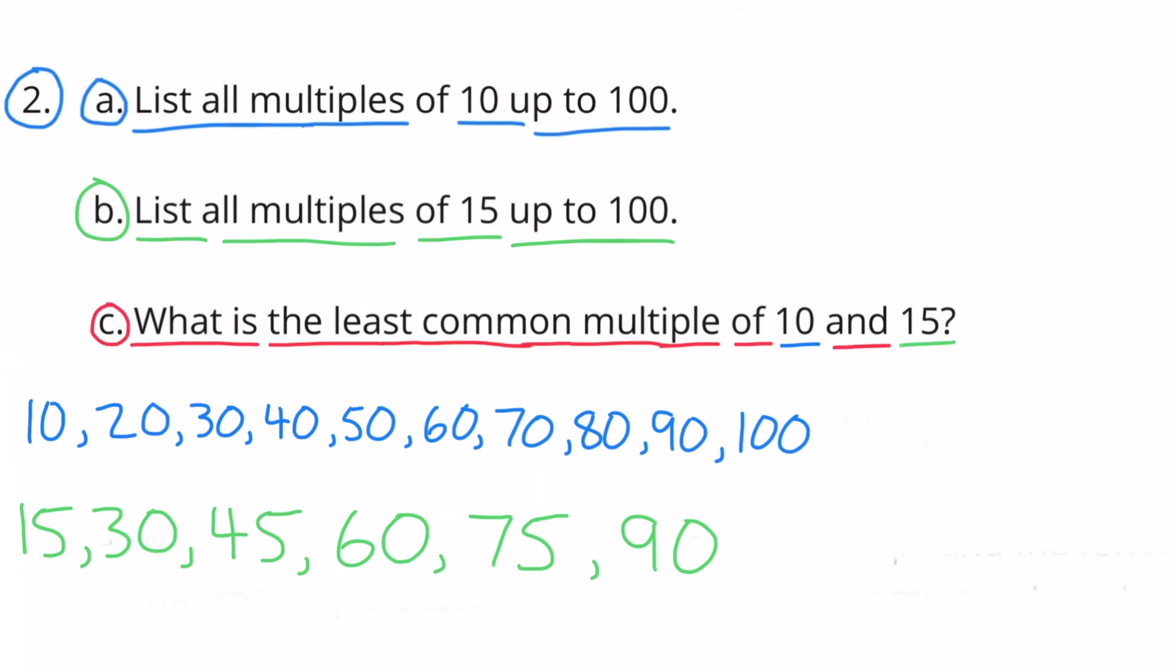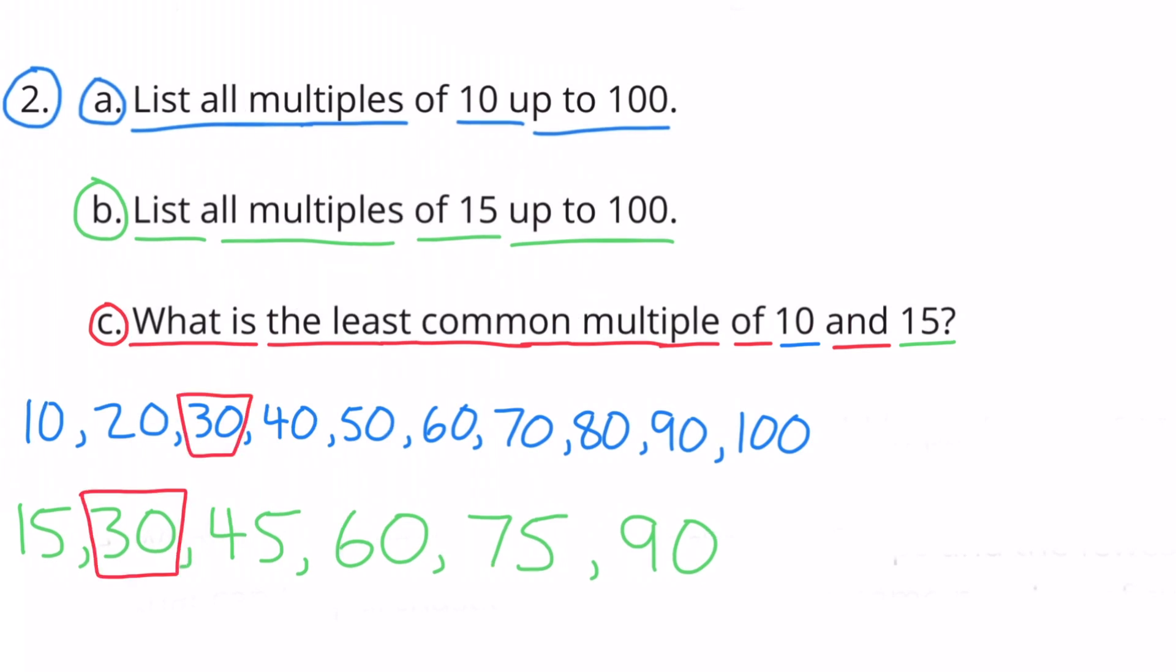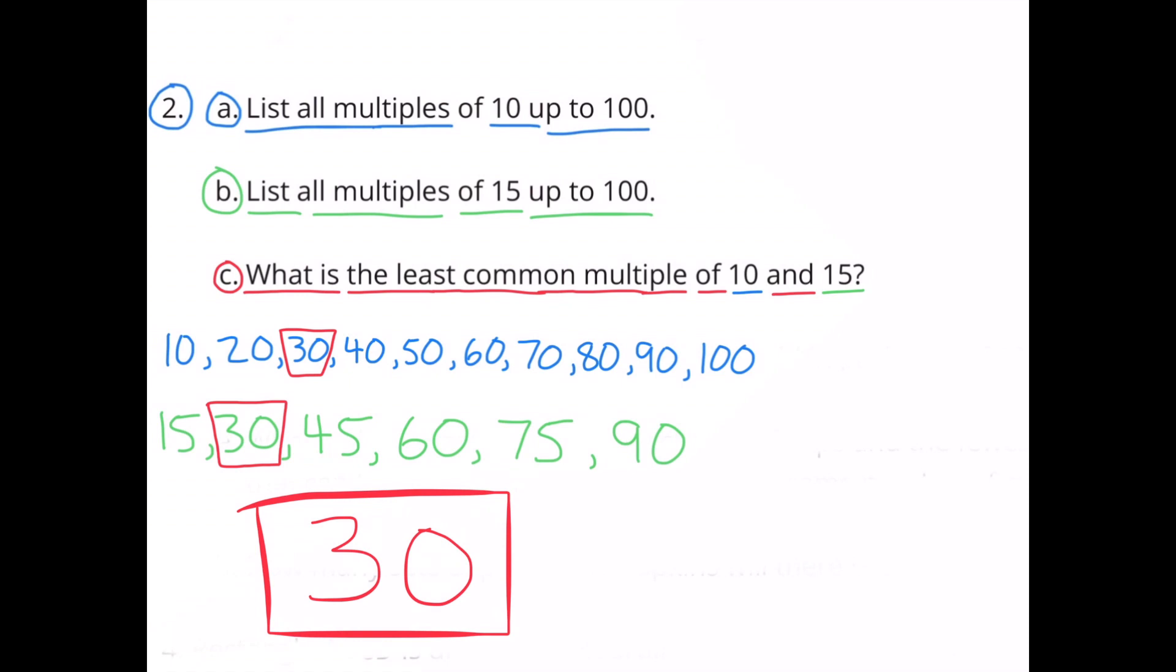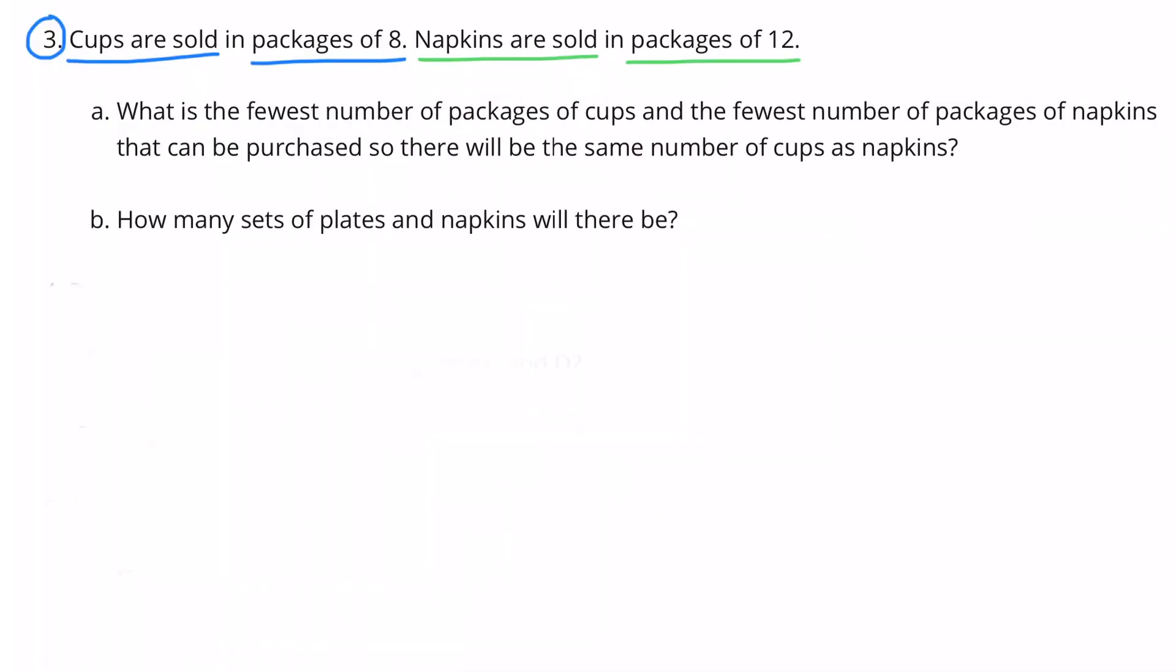C. What is the least common multiple of 10 and 15? Well, let's look at the multiples of 10 and look at the multiples of 15 and find the numbers that are in common and then select the smallest one. The smallest multiple that they have in common, or the least common multiple, is 30. The least common multiple of 10 and 15 is 30.